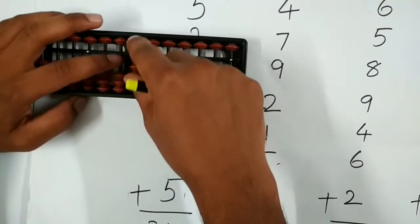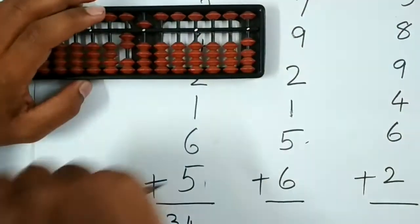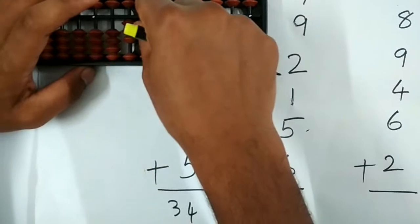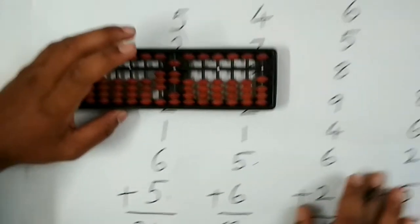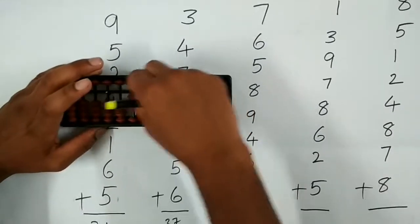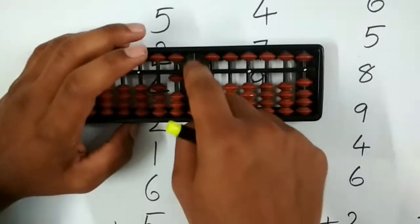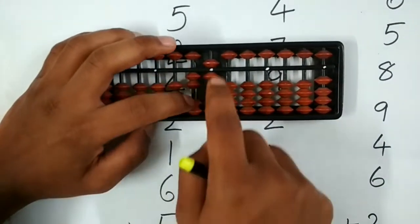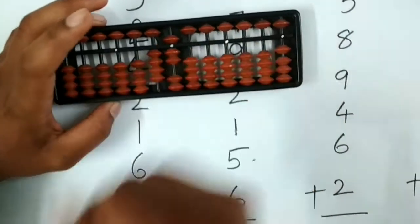7, 9, 2, 1, 5, 6. The answer is 37. Next: 7, 6, 5, 8, 9, 4, 6, 2. The answer